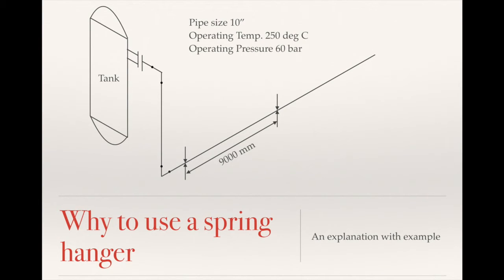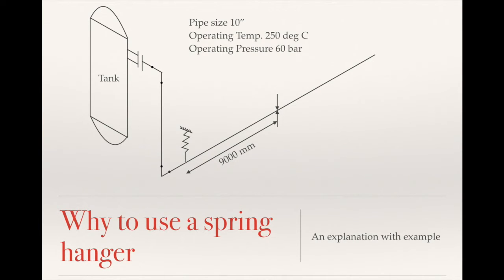Normally, if we forget about a spring, we need to support this pipe. Based on experience, we put supports with a span of 9 meters. But in this leg there will be a large amount of thermal expansion due to the operating temperature. The pipe will try to expand, but due to the support it cannot, and all the force goes onto the nozzle. So we need a device that can support the pipe and at the same time allow thermal expansion — and that's the spring hanger.